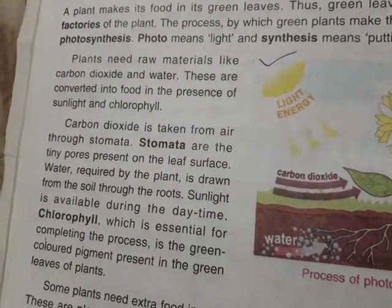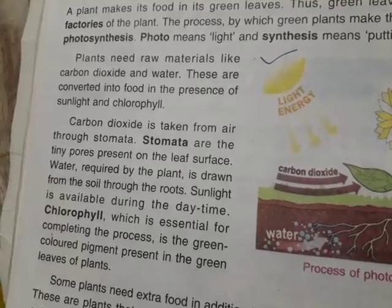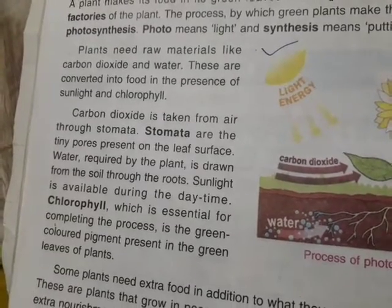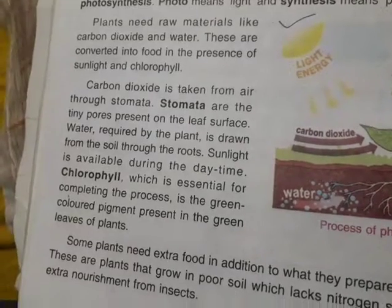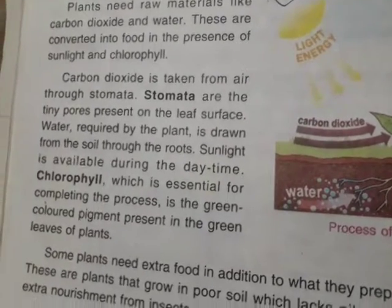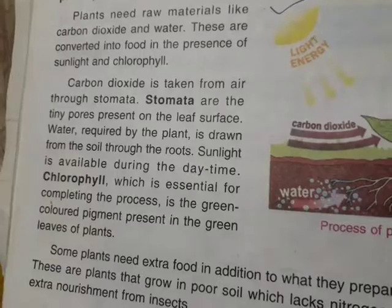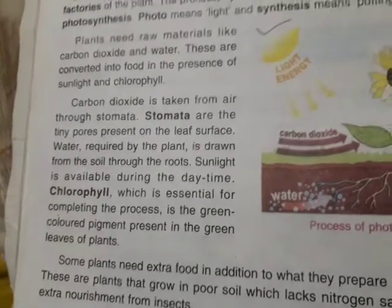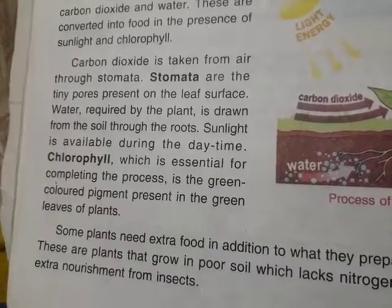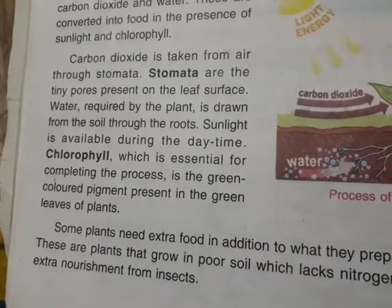Carbon dioxide is collected from the air with the help of stomata present on the surface of the leaves. Stomata are the tiny pores present on the leaf surface. Water required by plants is drawn from the soil through the roots. Sunlight is available during the daytime, so it means plants make food only during the day. This is the action of chlorophyll, the green pigment present in their leaves, which is essential for completing the process in the green leaves.